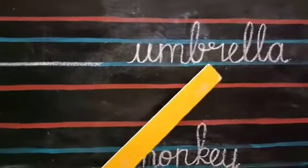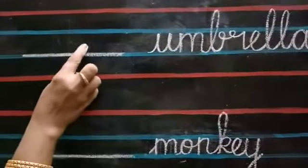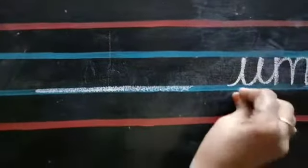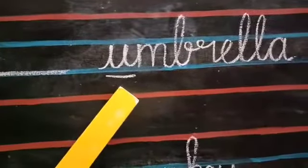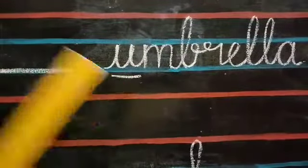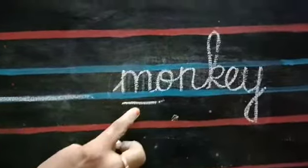U, M, B, R, E, L, L, A — Umbrella. What should I write here? A or AN? Check the first letter of the word. Is U a vowel? Yes. U is a vowel. So, write AN. AN Umbrella. What word is this, children? M, O, N, K, E, Y — Monkey. Check the first letter. Is M a vowel? No. So, write only A. A, Monkey.